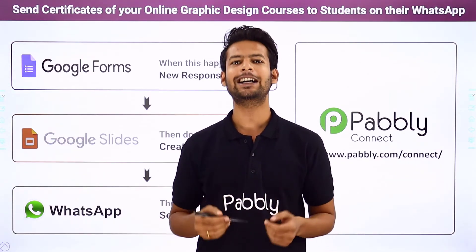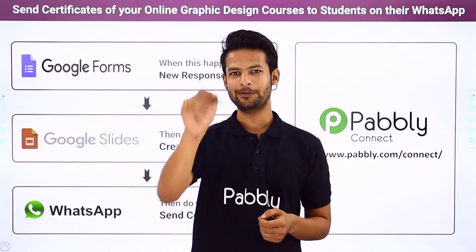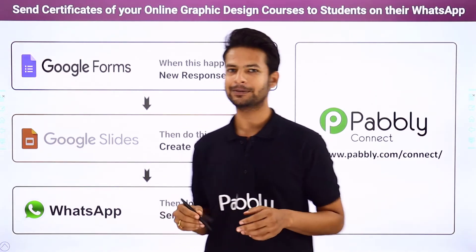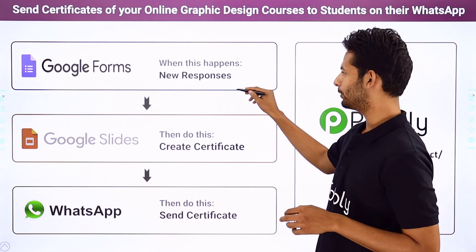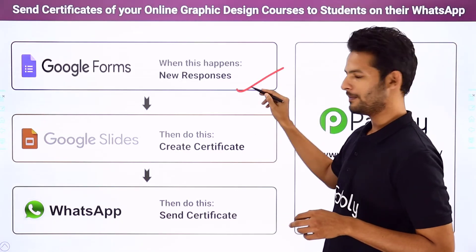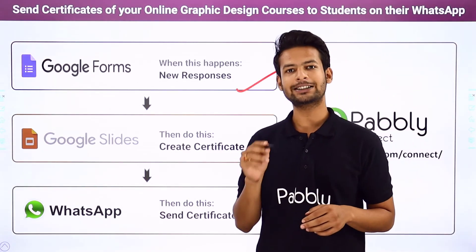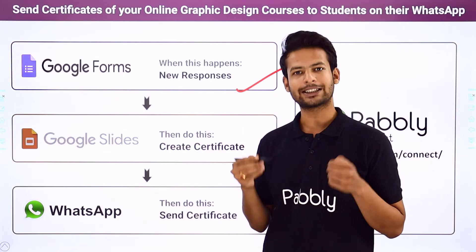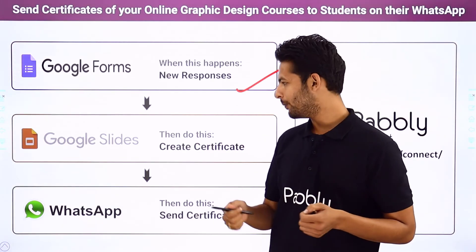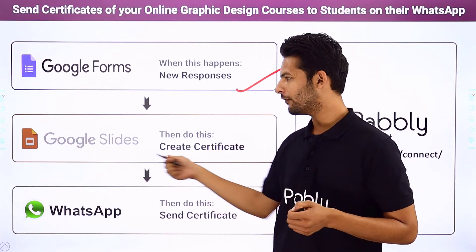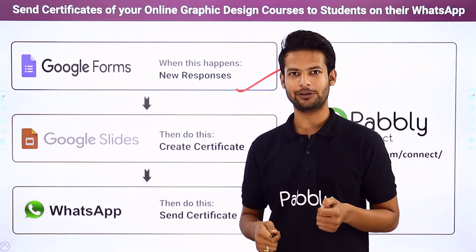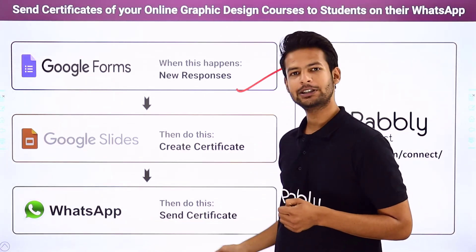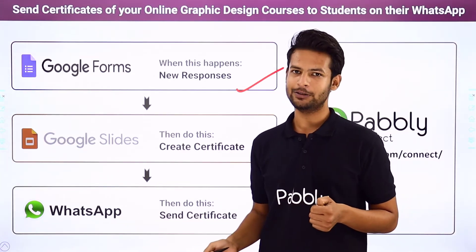So to save your time I suggest bringing some automation here. You want something like: you have created a form for your students, the students just have to fill this form, and on successful form submission automatically a certificate will be created for that individual student and again automatically it will be sent to them on WhatsApp.